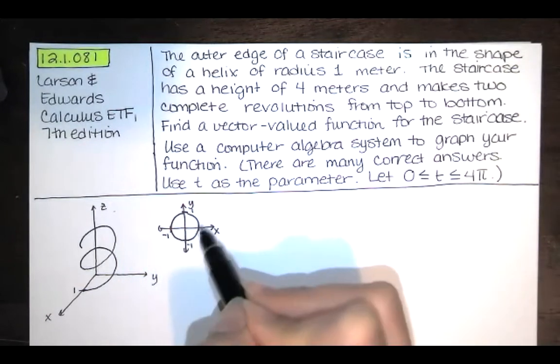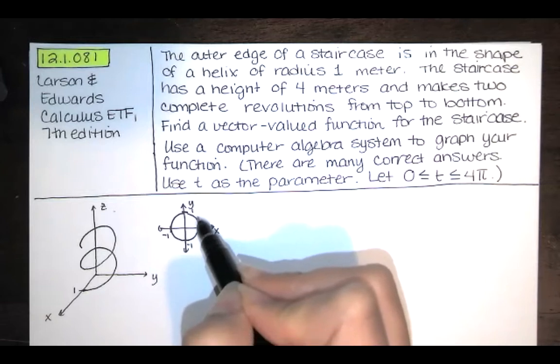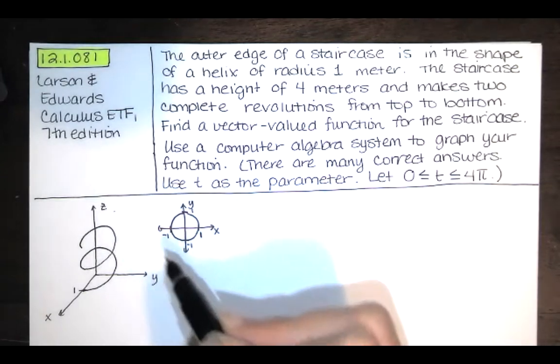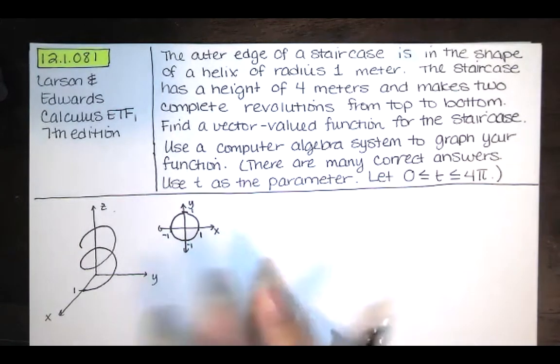Now we're told that t is supposed to go from 0 to 4π. So from 0 to 2π, we make one revolution. And then from 2π to 4π, we make that second revolution. So that's enough to get us the parametric equations for x of t and y of t, as well as almost get us the parametric equation for z of t.